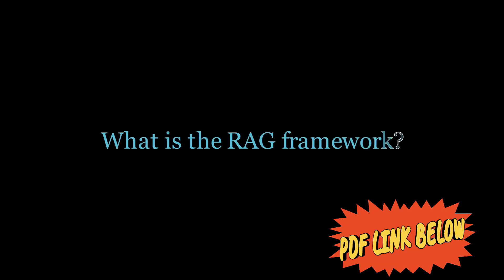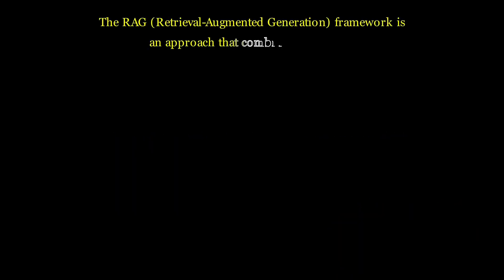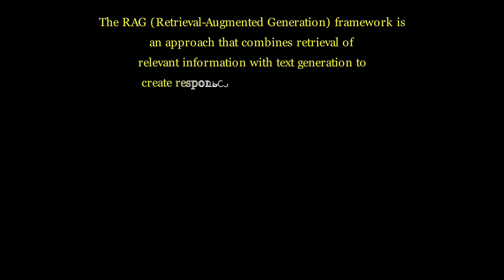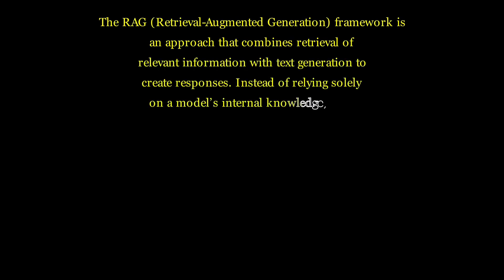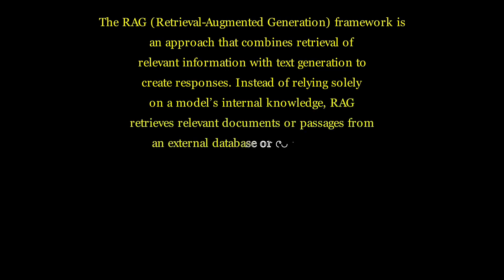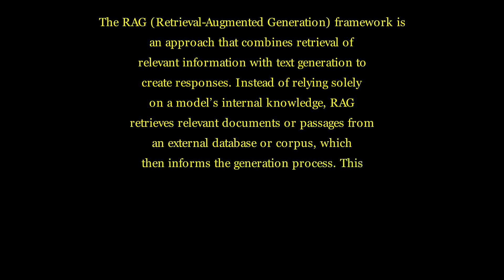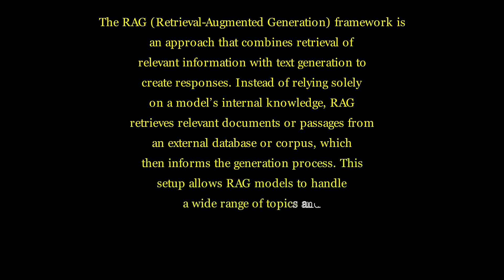What is the RAG framework? RAG, Retrieval Augmented Generation, is a framework that combines retrieval of relevant information with text generation to create responses. Instead of relying solely on a model's internal knowledge, RAG retrieves relevant documents or passages from an external database or corpus, which then informs the generation process. This allows RAG models to handle a wide range of topics and adapt quickly to new information.